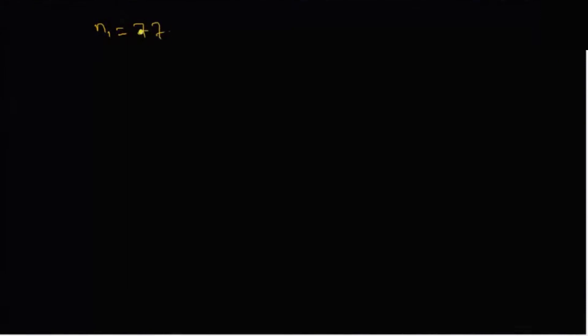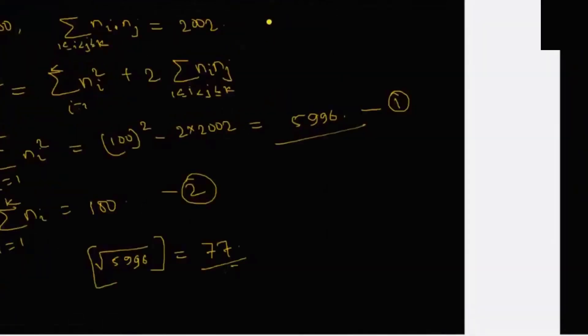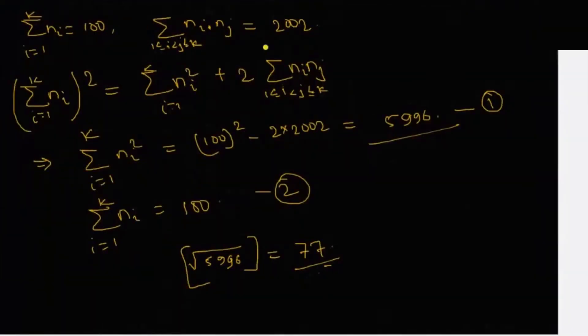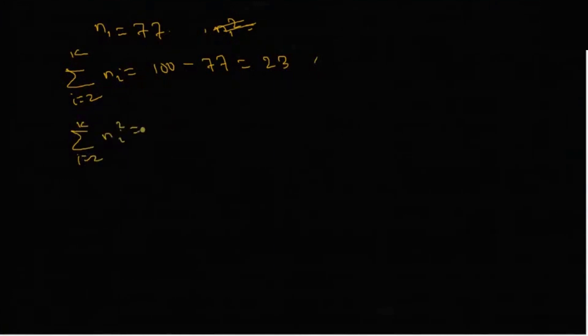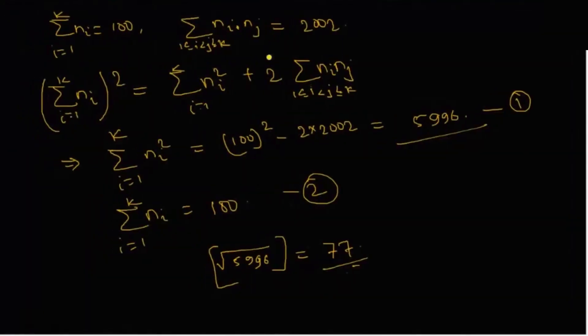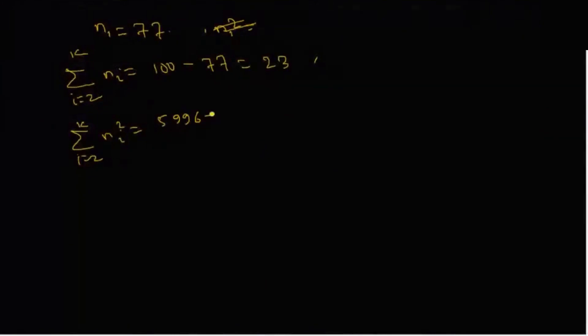Say n1 equals 77. Then the summation of ni for i from 2 to k equals 100 minus 77, which is 23. And summation of ni squared for i from 2 to k equals 5996 minus 77 squared, which gives us 67.